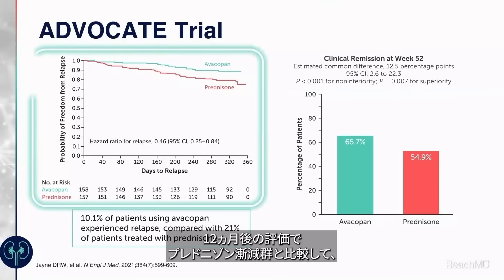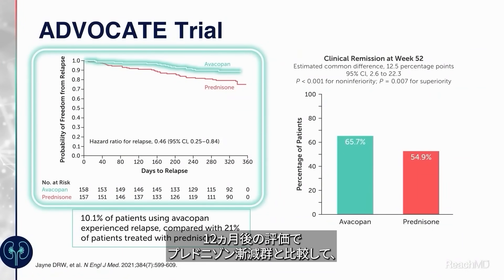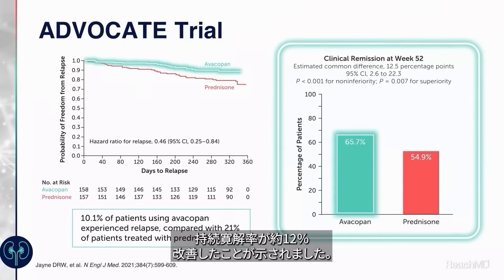We now have an alternative therapy to glucocorticoids, freeing many patients from the burden of glucocorticoid toxicity. Another learning from clinical trials is that rates of sustained remission are still not very high — of the order of 60 to 70% — and there is opportunity with better agents to improve complete remission rates. The ADVOCATE trial demonstrated an improvement in sustained remission rates by about 12% when compared to the prednisolone taper group assessed at 12 months.